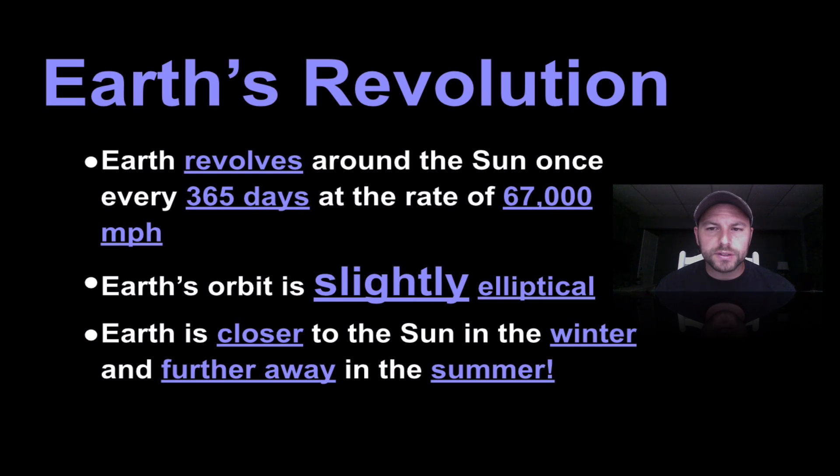These are some things based off his laws. Earth revolves around the sun once every 365 days, moving at 67,000 miles per hour. The orbit is slightly elliptical, and we'll get more to that very soon. And the Earth is closer to the sun in the winter and farther away in the summer. These are important, make sure you have them down, especially the last two.